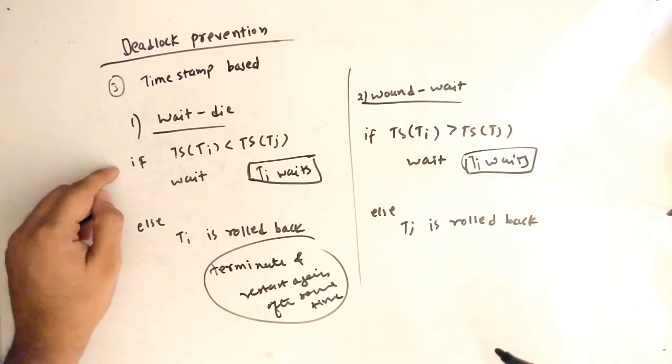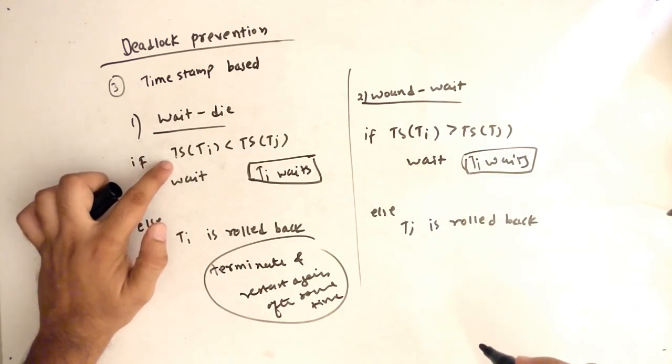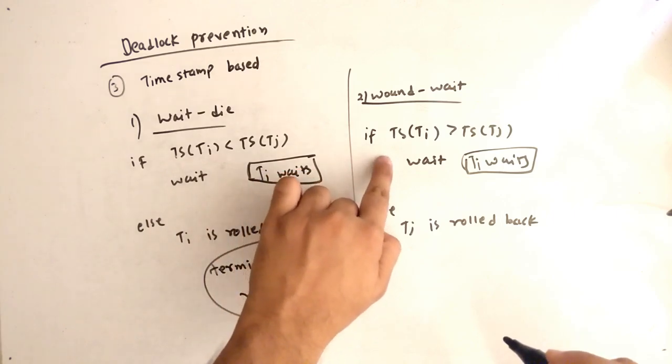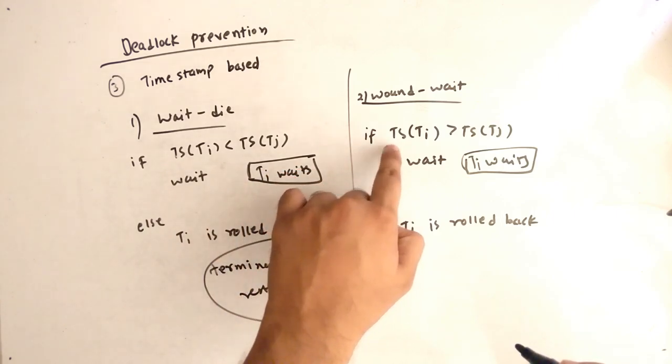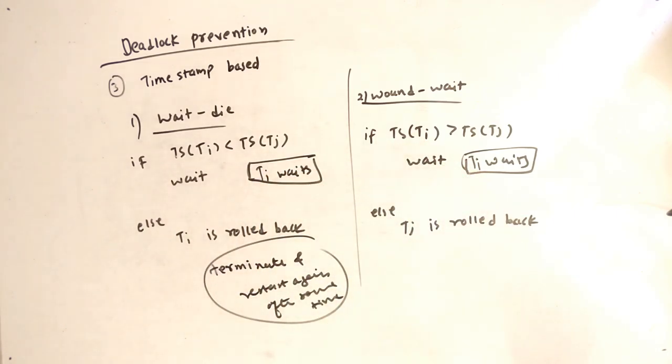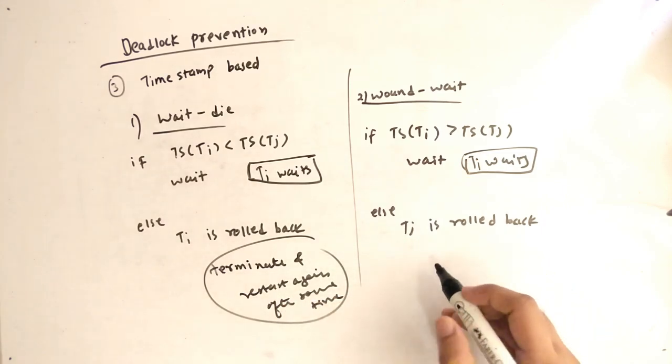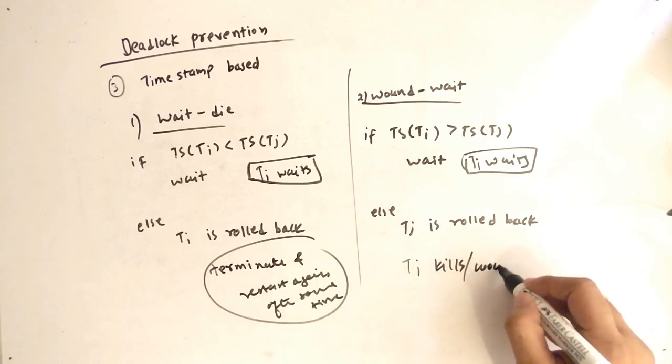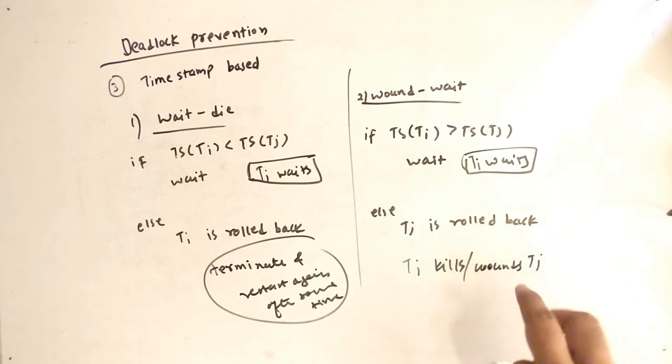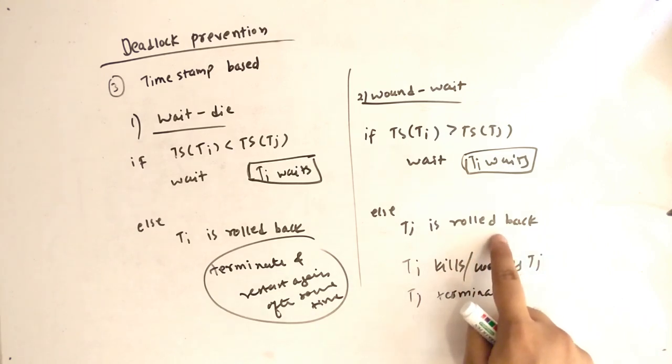So you can see that in wait-die, if timestamp of Ti is less than, Ti waits. But in wound-wait, if timestamp of Ti is greater than, Ti waits. But here is the interesting part. Else Tj is rolled back. This means that Ti kills or wounds Tj. So Tj is killed or wounded. So Tj terminates. If Tj terminates, means Tj is rolled back and it is restarted after some time.